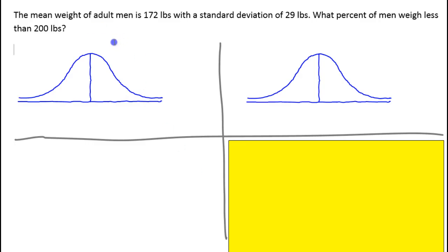Here's our example. The mean weight of adult men is 172 pounds with a standard deviation of 29 pounds. What percent of men weigh less than 200 pounds? To organize our work, let's make these two sketches of a generic bell curve. On this side, we're going to do pounds.